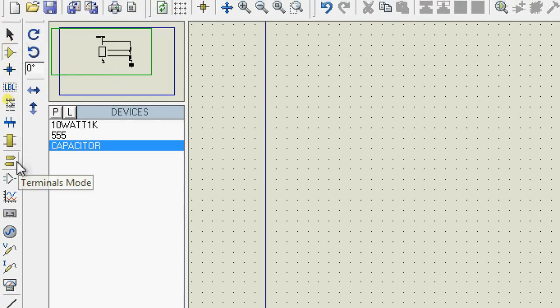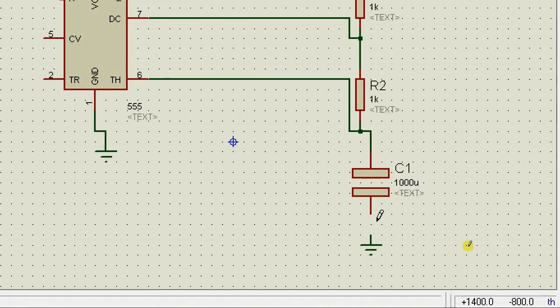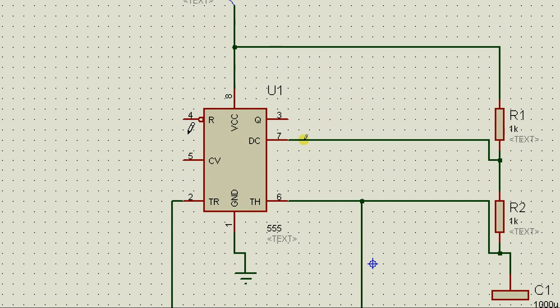Now finally the capacitor. Let's ground the capacitor and short pin 2 and pin 6. Pin 4 is reset, and in order to prevent the IC from resetting itself, I'm going to permanently set it to high.